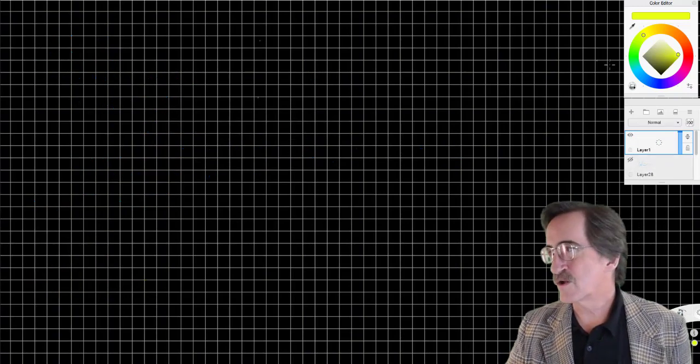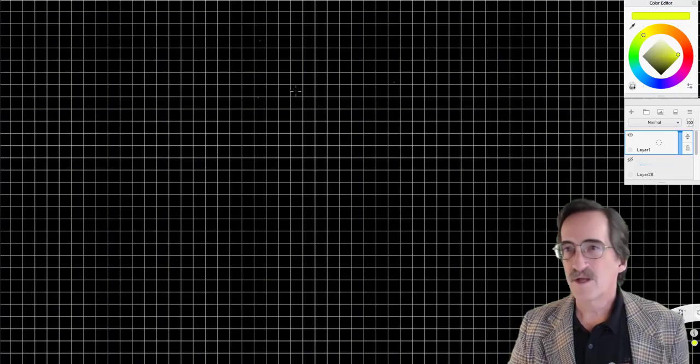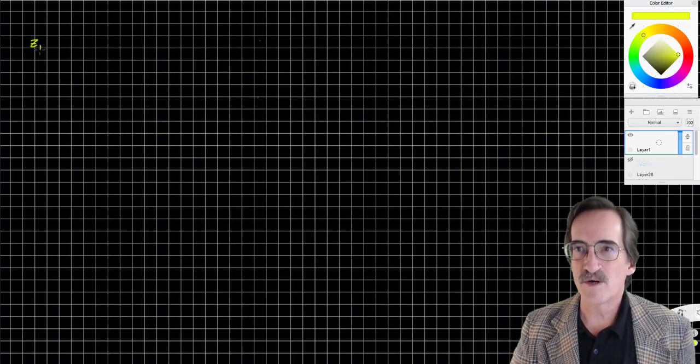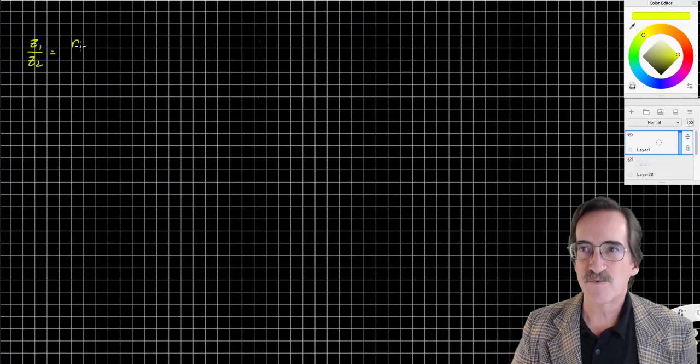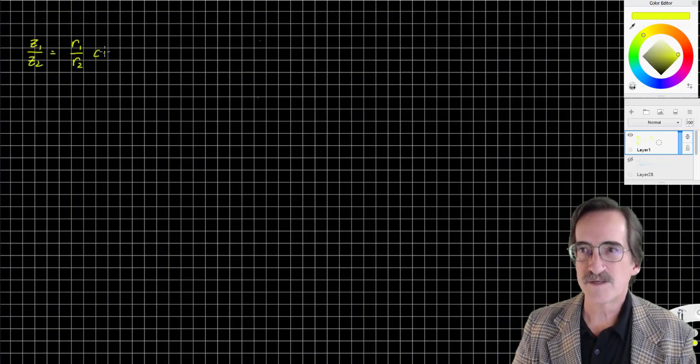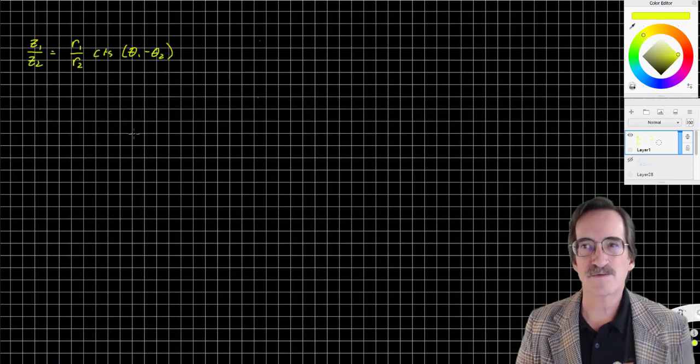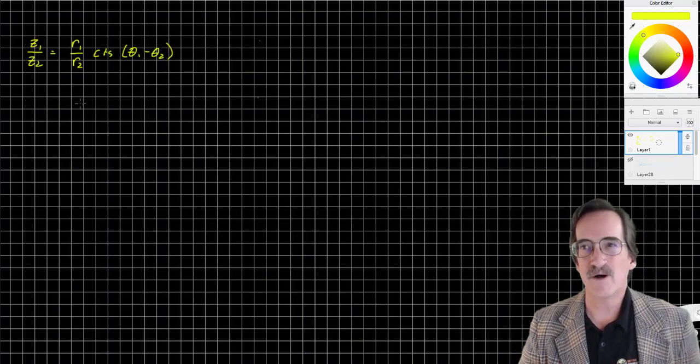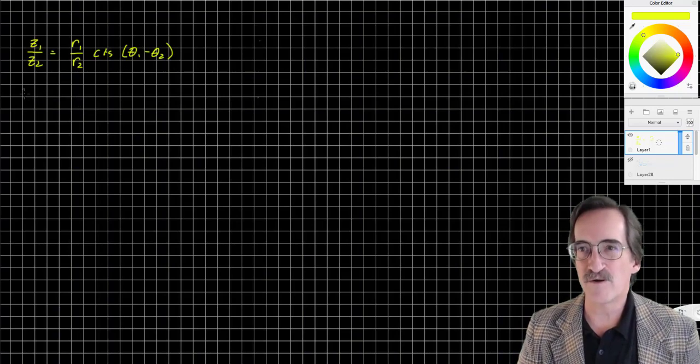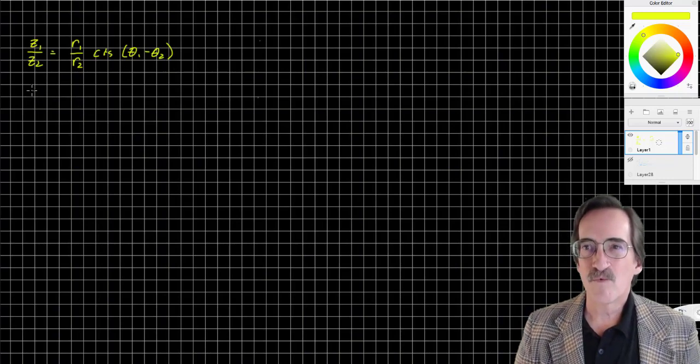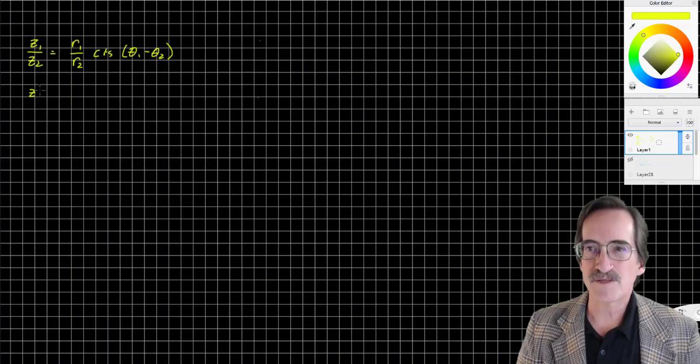And by the way, there's a corollary that comes from this as well. If I want to divide Z1 divided by Z2, I divide the radiuses, R1 divided by R2 cis, and then you subtract the angles, theta 1 minus theta 2. And I'll leave that to you to verify or prove.